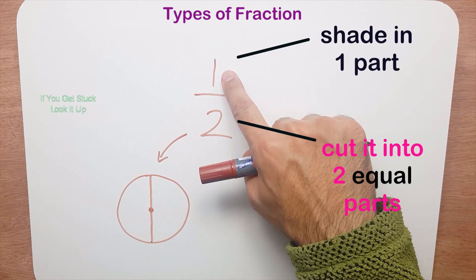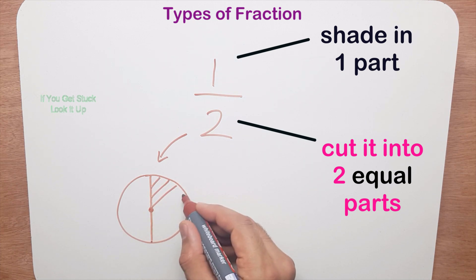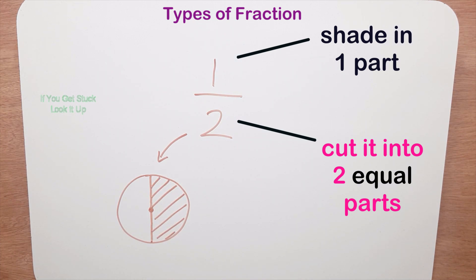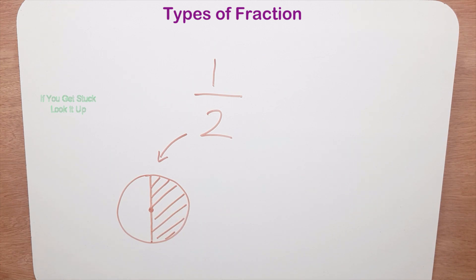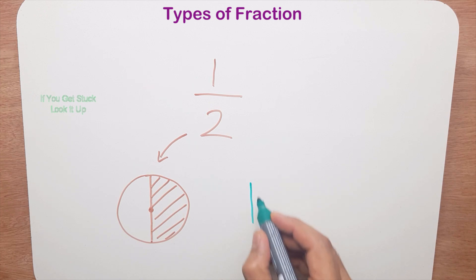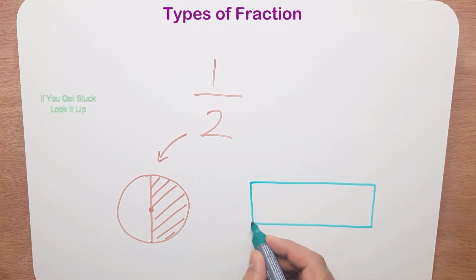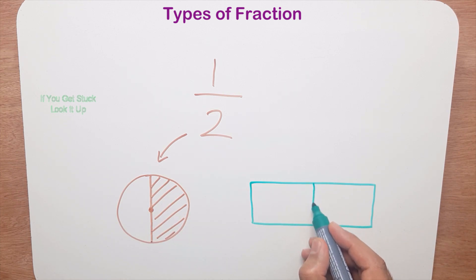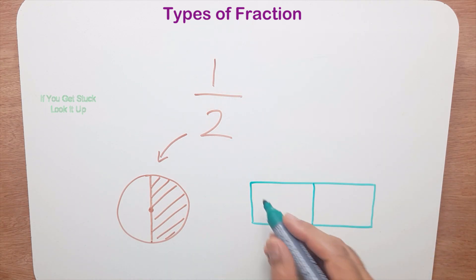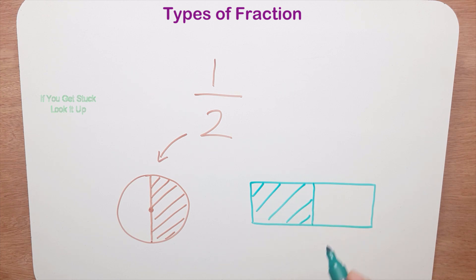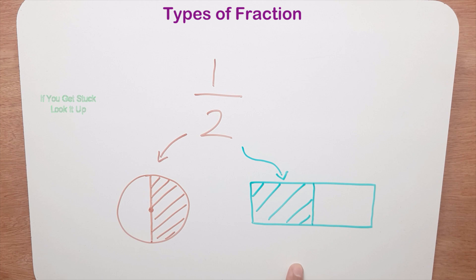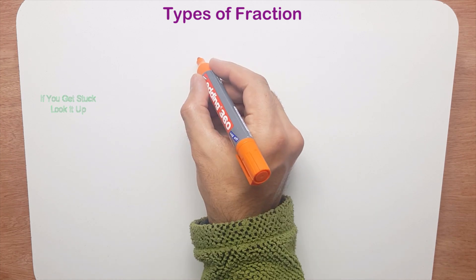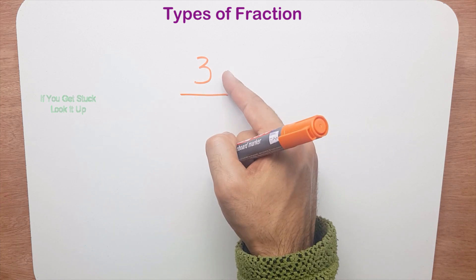Now I want to eat one of the pieces, so this bit here that I'm shading in I want to eat. So I've eaten one half of this pizza. Now if you use the chocolate bar method, you have a bar of chocolate and we're going to cut that bar into two equal pieces straight down the middle, and we're going to eat one of them — I'll shade this in. So one half of this chocolate bar is shaded. This is the pizza model and this is the chocolate bar model.